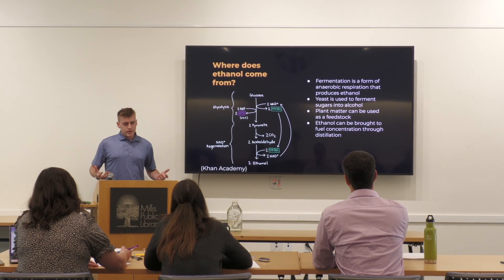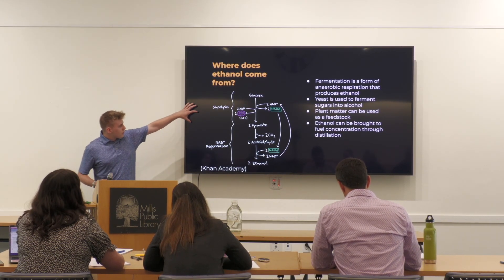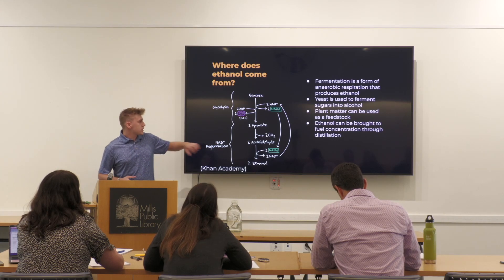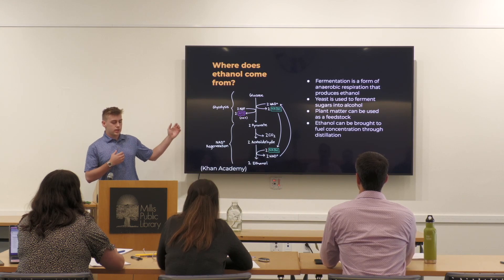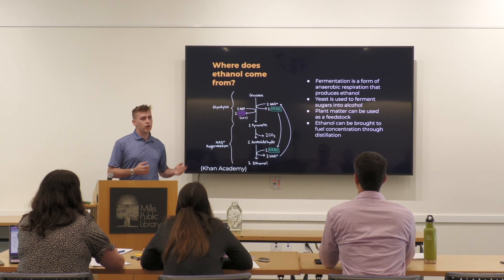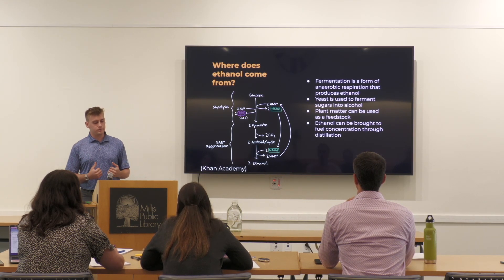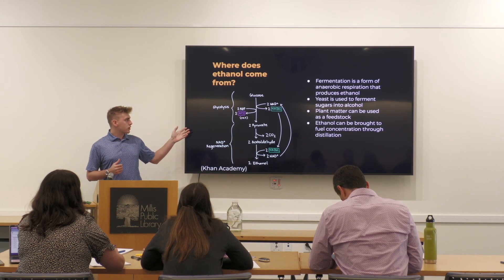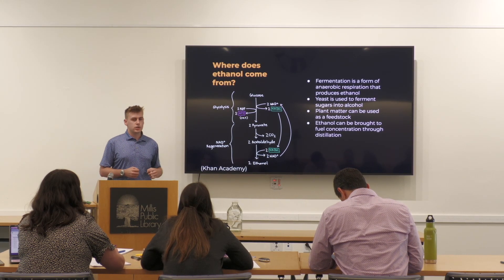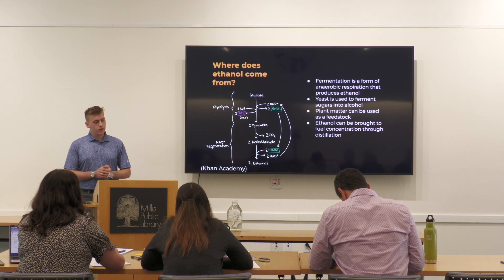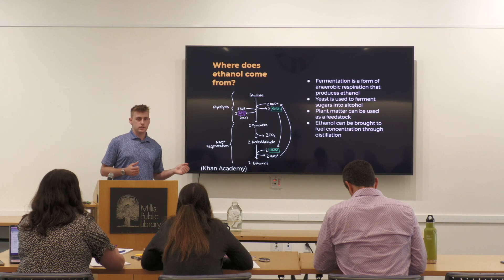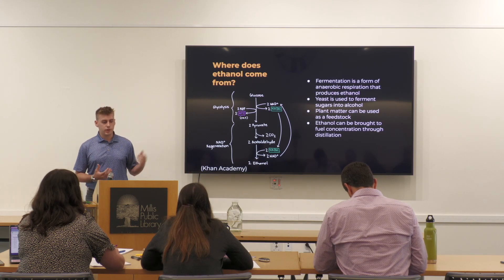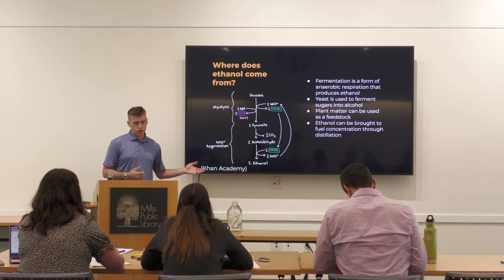A little bit of background: where does ethanol come from? It's glucose in, ethanol out. Fermentation is an anaerobic process that produces ethanol — respiration in the absence of oxygen. Yeast is used to ferment sugars into ethanol, which is the same alcohol found in beverages. The yeast we typically use is Saccharomyces cerevisiae, a species of yeast we use because it's easy to genetically engineer for better traits that make it more effective at producing alcohol.